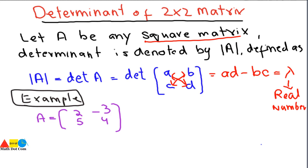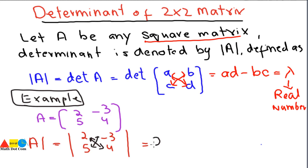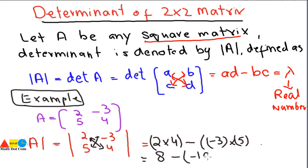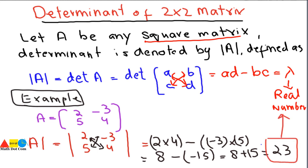First, we write it in determinant form with bars around it: |2, 5; -3, 4|. Then we multiply as: 2×4 minus (-3)×5. That gives us 8 minus (-15), which equals 8 + 15 = 23. So we have got a real number. This is how you can find the determinant of a 2×2 matrix.